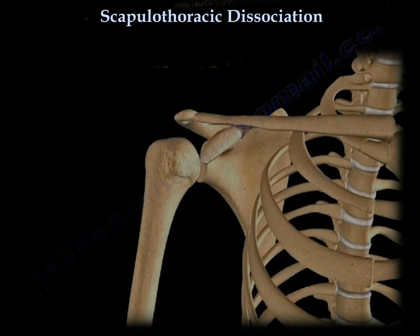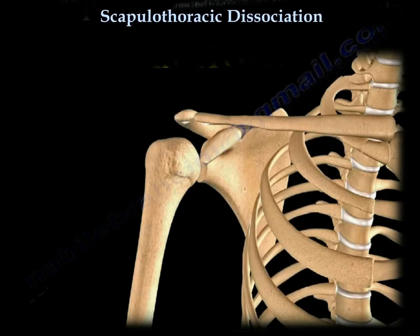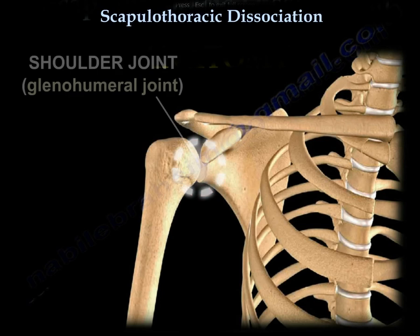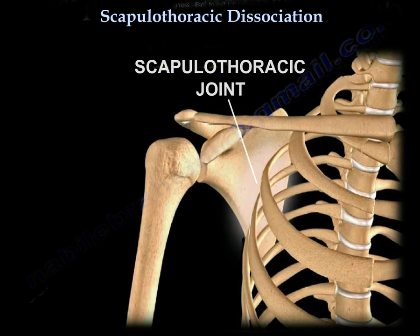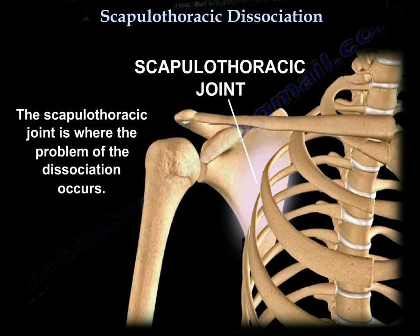Scapulothoracic dissociation — here is the anatomy. You can see the shoulder joint, or the glenohumeral joint. Here is the scapulothoracic joint where the problem of the dissociation occurs.